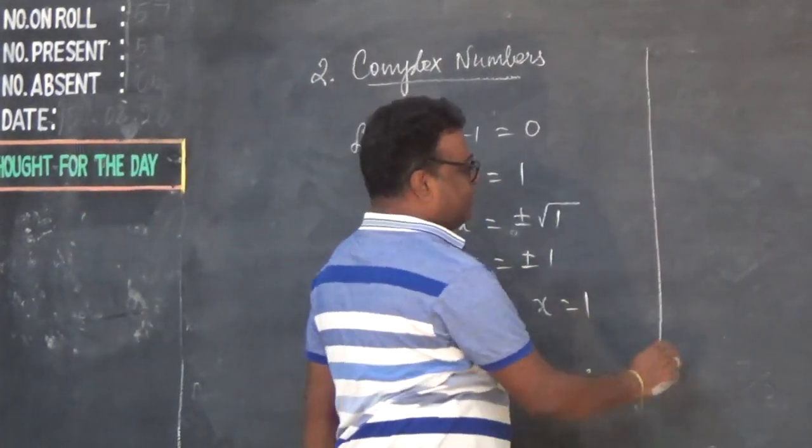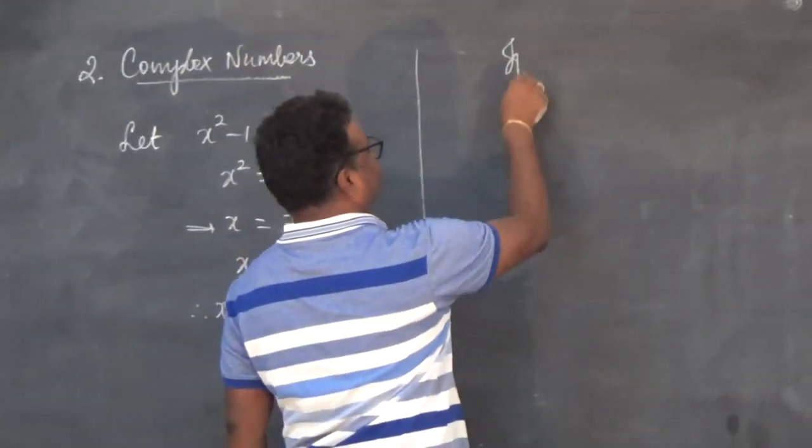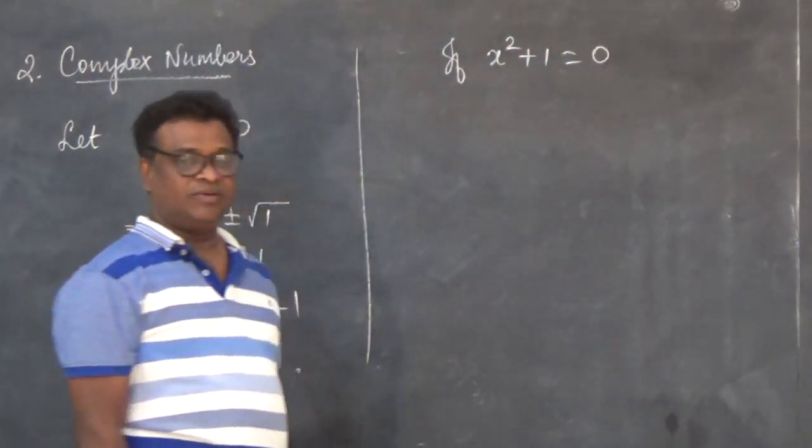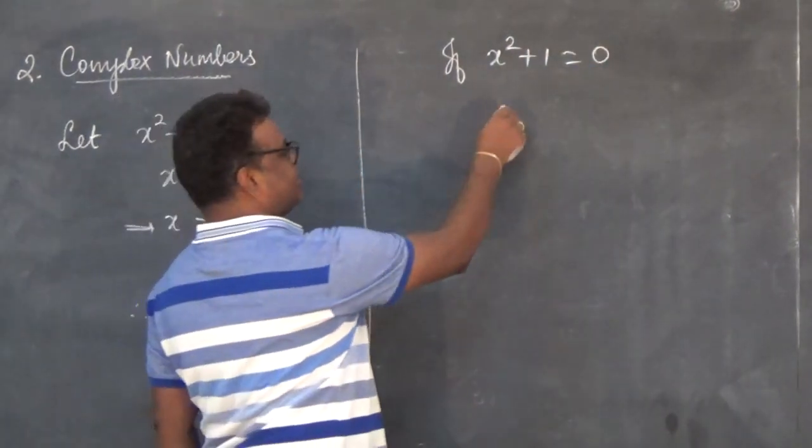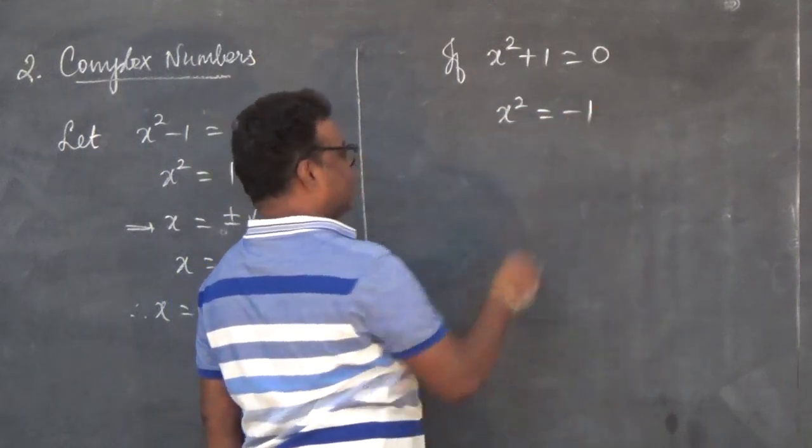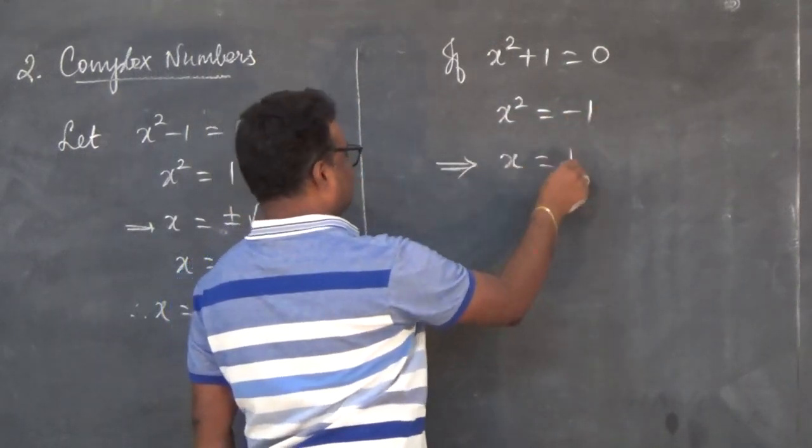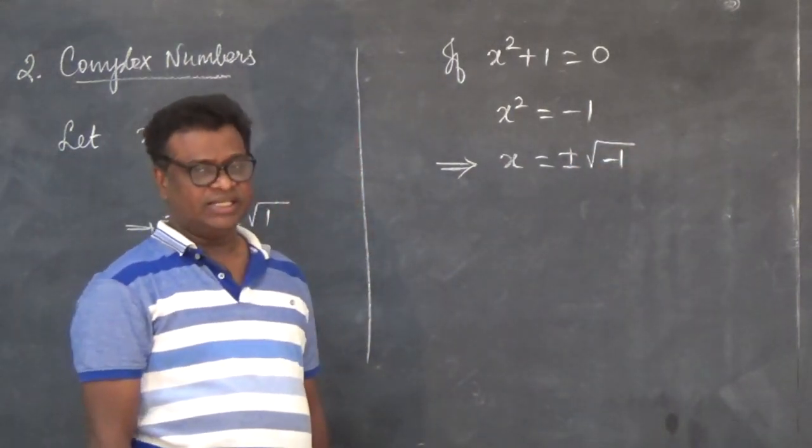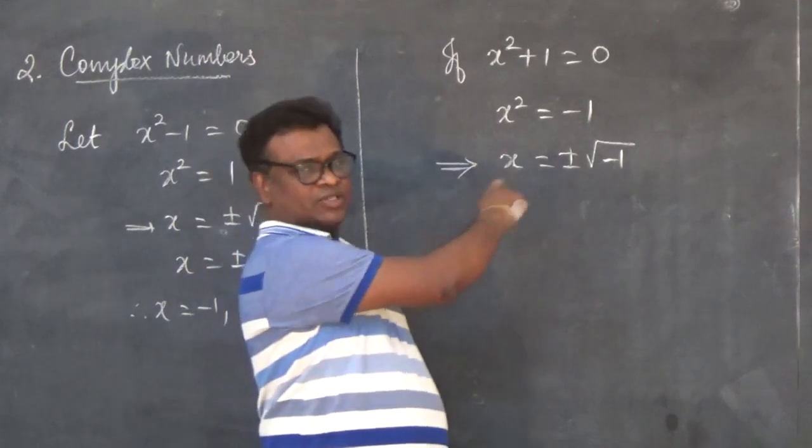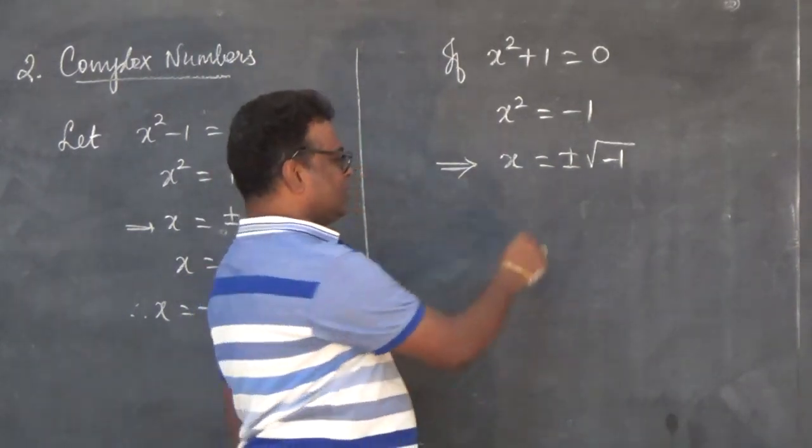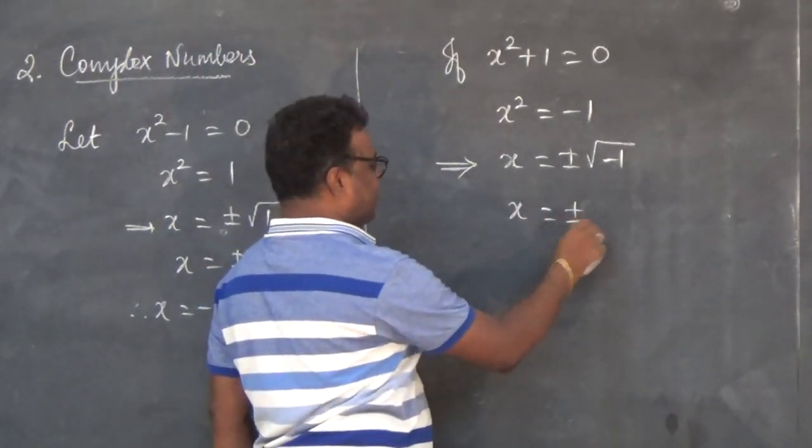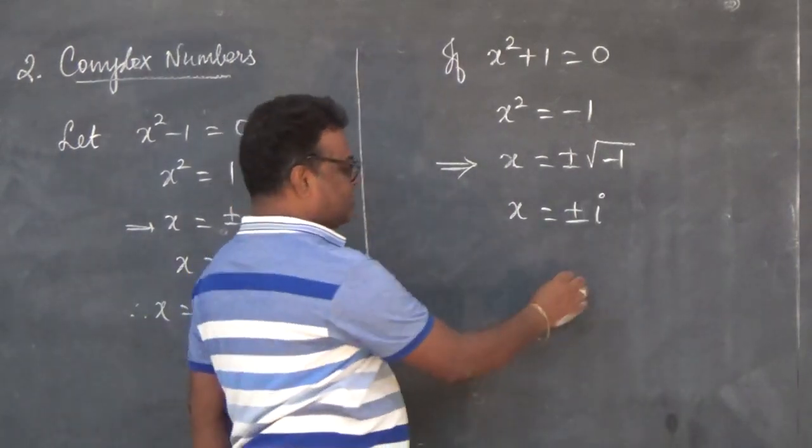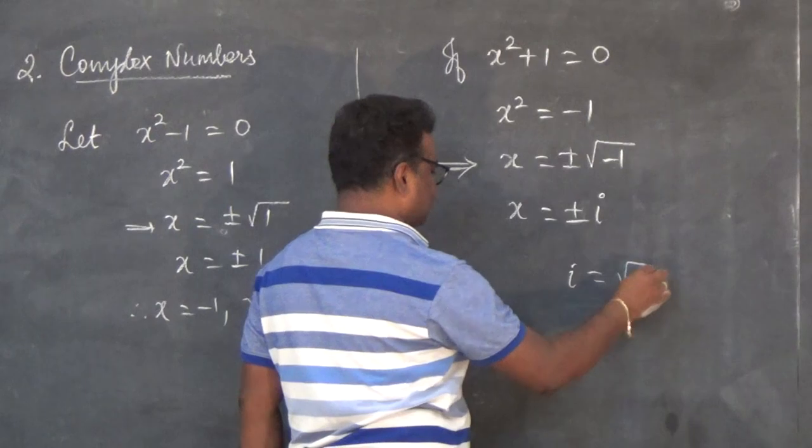But if the same equation is of the form x² + 1 = 0, then x² = -1. In this case, x = ±√(-1). It is difficult to find out the value of √(-1). So mathematicians wrote this as i, that means i = √(-1).